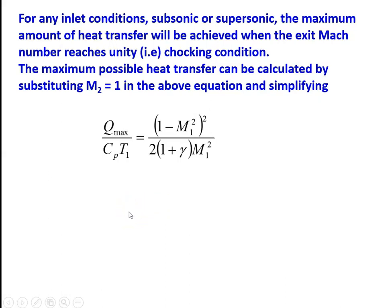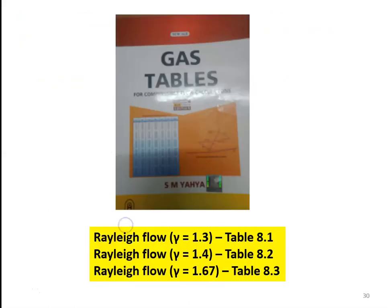All the equations discussed in the presentation are available in the gas tables book — the book is permitted in the examination, so do not worry about the equations. During problem solving, we refer to the gas tables. Properties for Rayleigh flow are available in tables 8.1, 8.2, and 8.3 for γ = 1.3, γ = 1.4, and γ = 1.67 respectively. We take the property values from the table and calculate the unknown value.